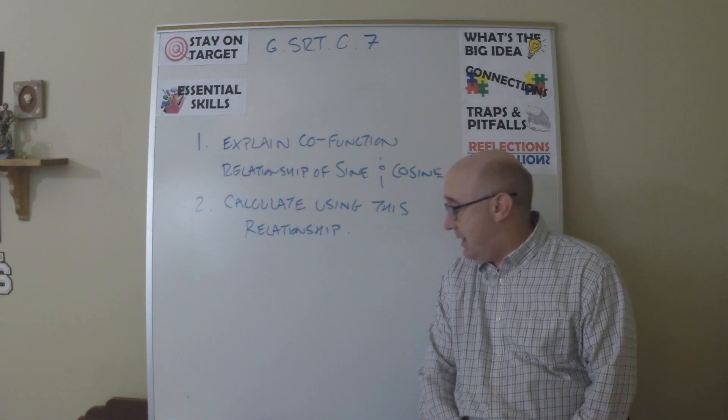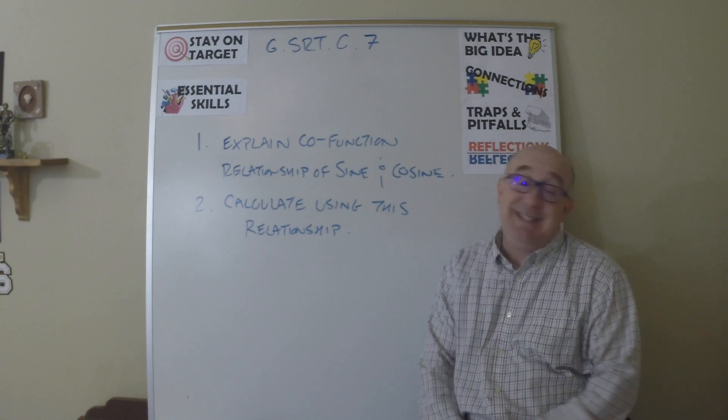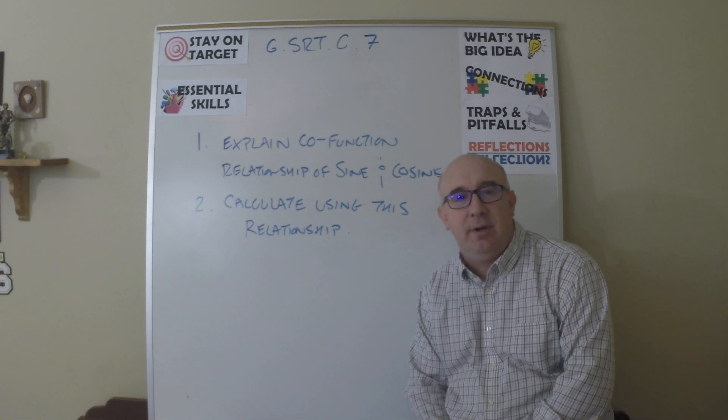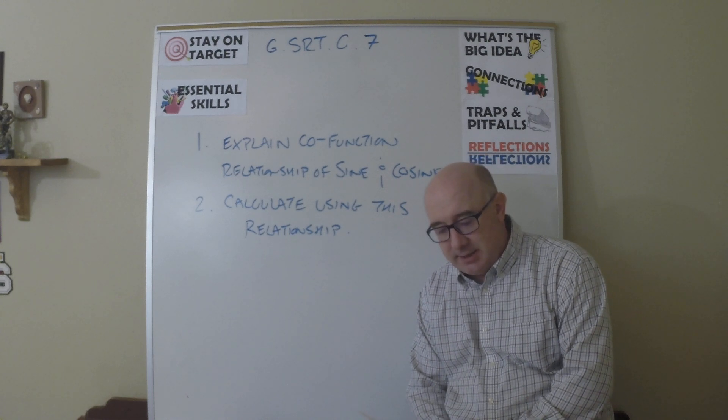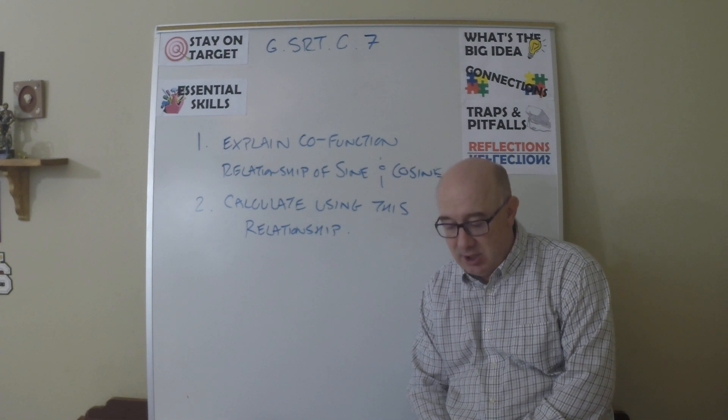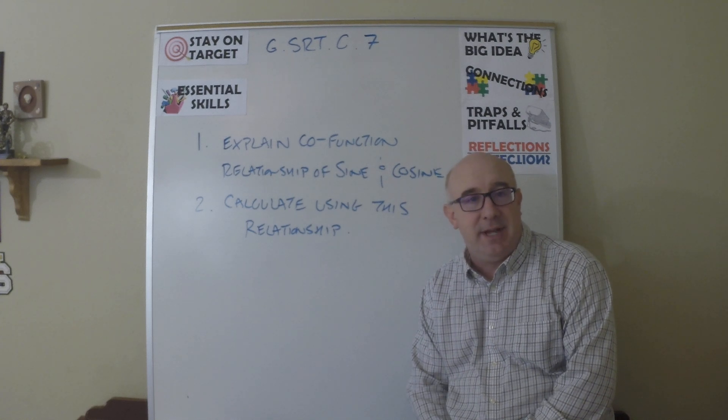All right, we're going to look at GSRT C7. This is a very small objective, easy to accomplish. It just says explain and use the relationship between sine and cosine of complement angles.